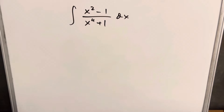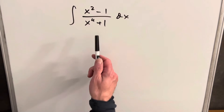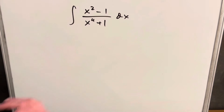The trouble we have is I don't have an easy way to factor the denominator. We'd like that plus to be a minus — if it was a minus, we could do difference of squares and it would simplify really easily.